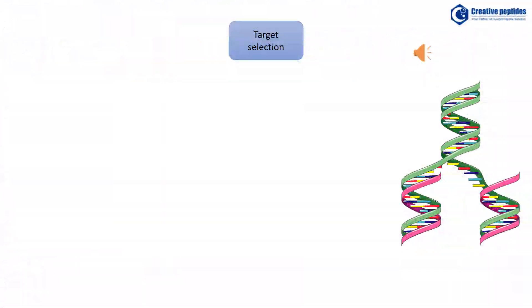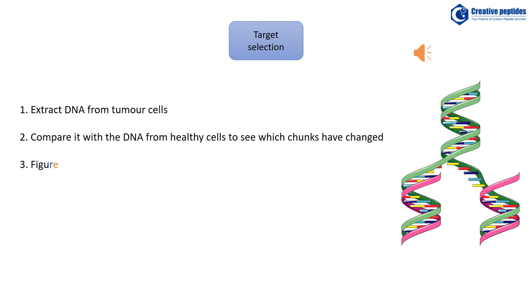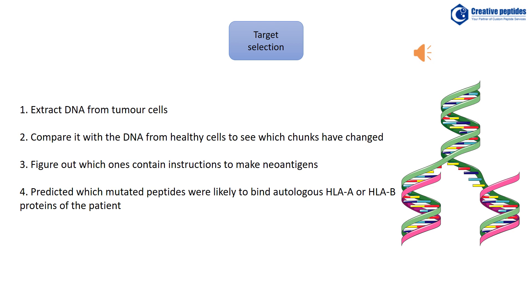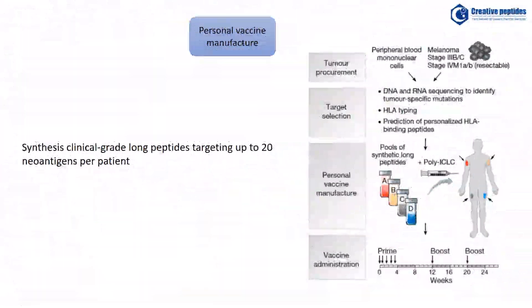Extract the DNA from tumor cells and compare it with the DNA from healthy cells to see which chunks have changed. Figure out which ones contain instructions to make neoantigens, and predict which mutated peptides are likely to bind autologous HLA proteins of the patient. Finally, synthesize clinical-grade long peptides targeting up to 20 neoantigens per patient.